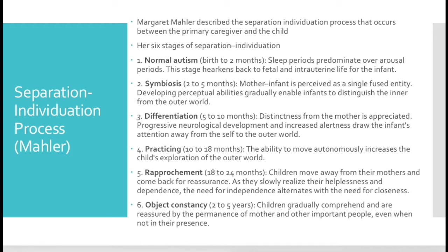If you know the name of the theorist and you can connect them with whatever theory they came up with — in this case, Margaret Mahler's separation-individuation process — you're going to score points right off the bat with that alone. You also want to know what the six stages are and the time frame within which those six stages are occurring.